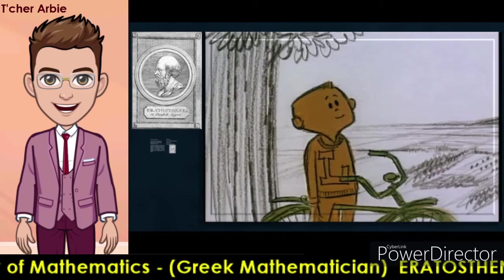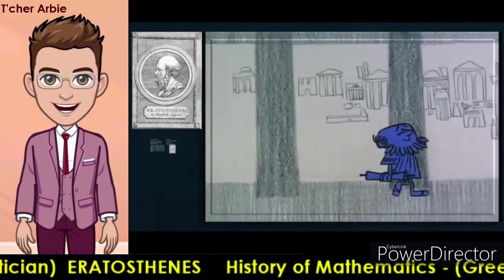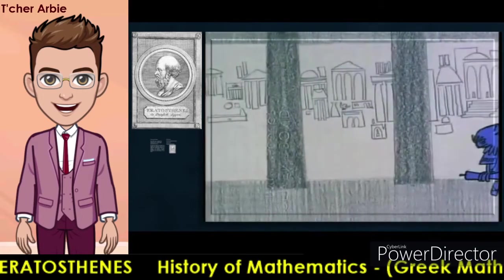A Greek named Eratosthenes did it 240 years before Christ. He was head of the great library of Alexandria in Egypt, a city built by the Greeks. He, like others, suspected that the world was round. After all, the sun and the moon were round. He had also noticed that the sun's rays fell in parallel lines.